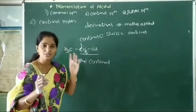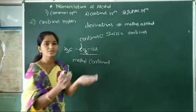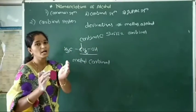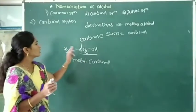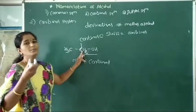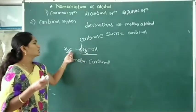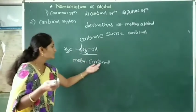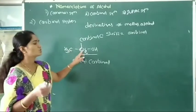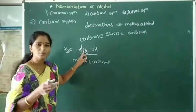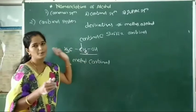In the carbynol system, we consider CH2OH as the carbynol carbon. Which alkyl group is attached to the carbynol carbon atom? A methyl group is attached to this carbynol, so the name of this alcohol — the name of this carbynol — is methyl carbynol.